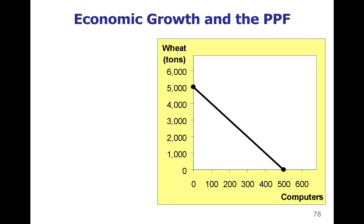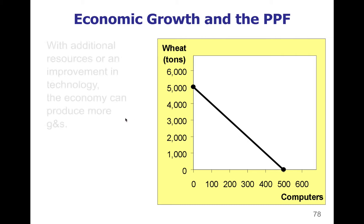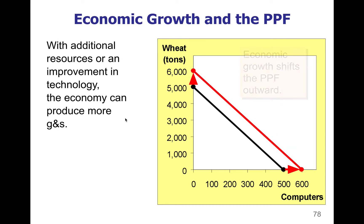Here's an example — our wheat and computers example with a maximum of 5,000 wheat and 500 computers. This is the maximum possible with the amount of resources we have available. But if there is some type of improvement in technology, improvement in skills or training, or we have more workers, and that improvement is used in wheat production, we might be able to increase the amount of wheat we produce to 6,000.